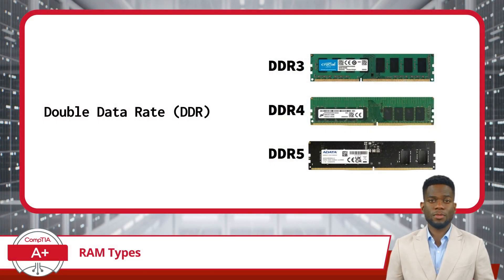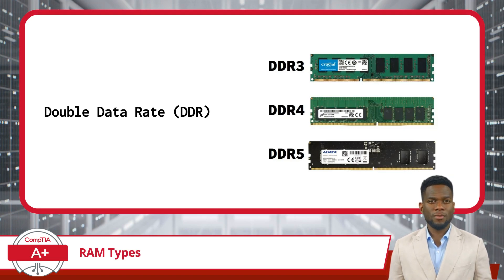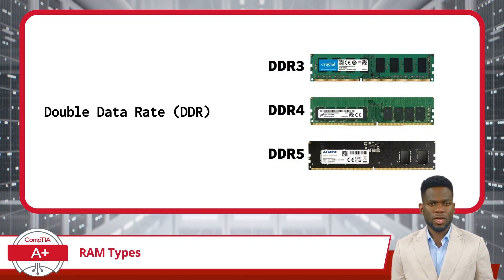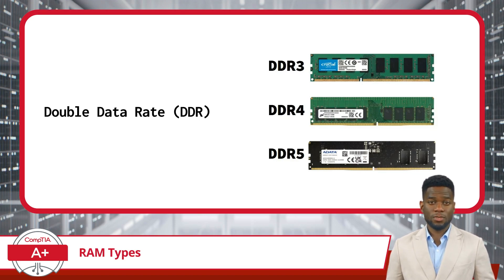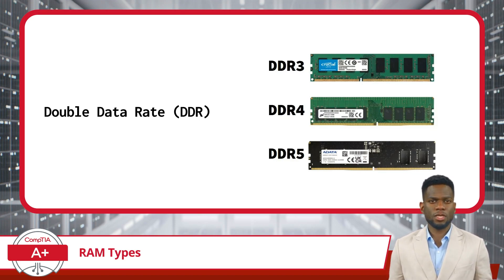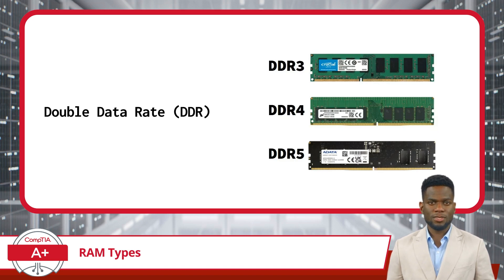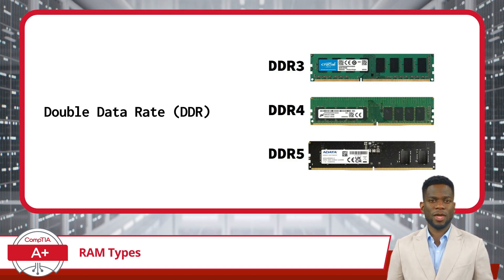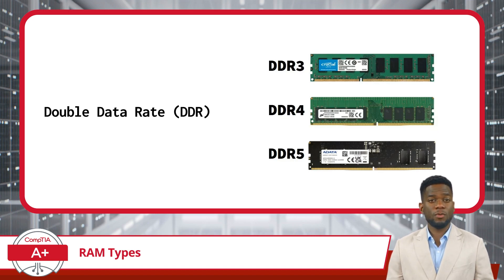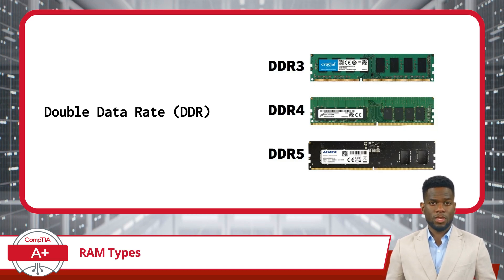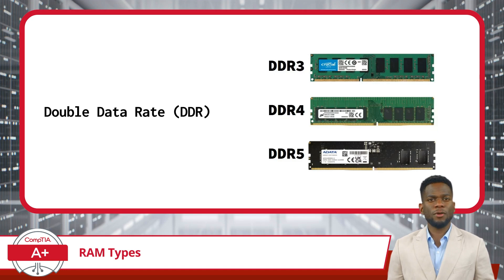A DIMM is merely the physical packaging for a memory type known as DDR, or double data rate memory. It provides a standardized form factor and interface, allowing for easy installation and integration of DDR memory into a computer system. DIMMs feature a series of electrical contacts along both edges of the module, which align with corresponding slots on the motherboard. This design enables a secure and reliable connection between the memory module and the system, ensuring efficient data transfer and memory operation.